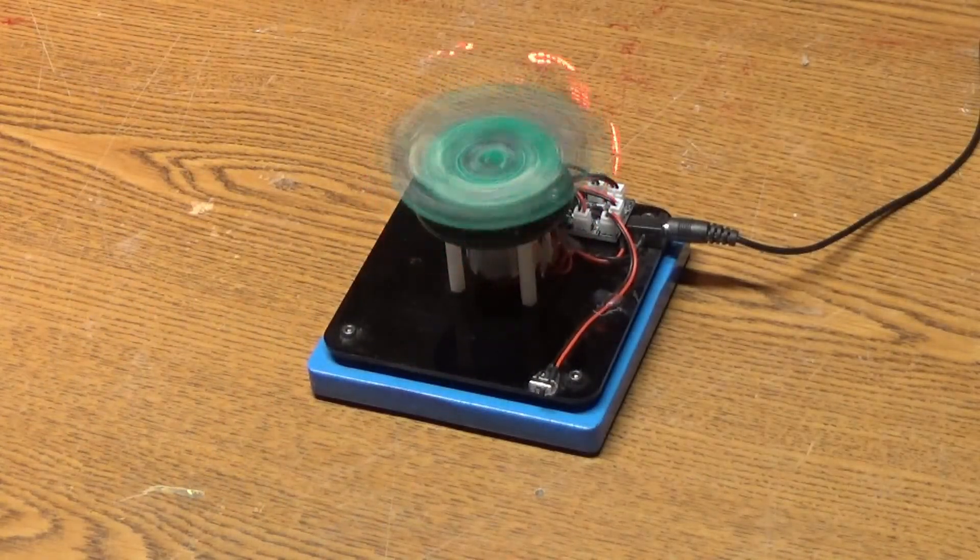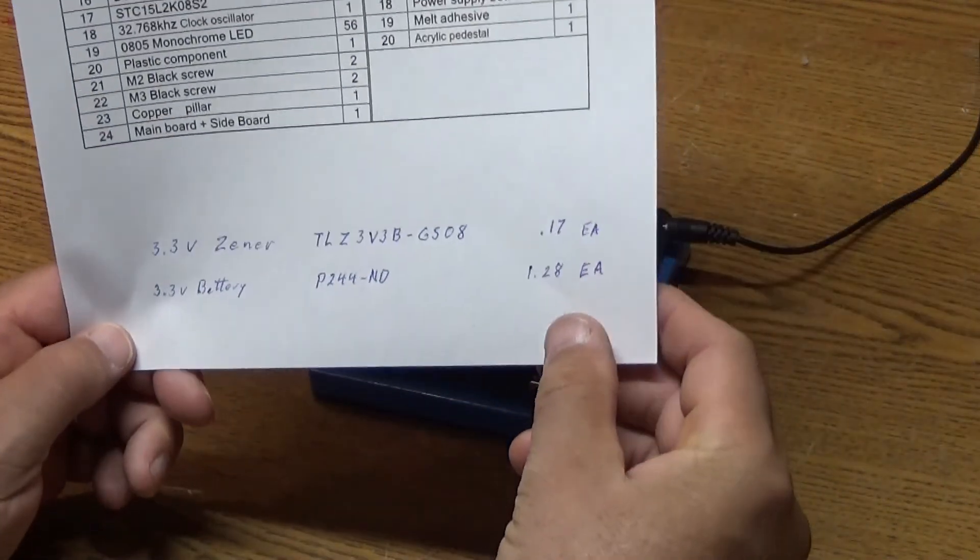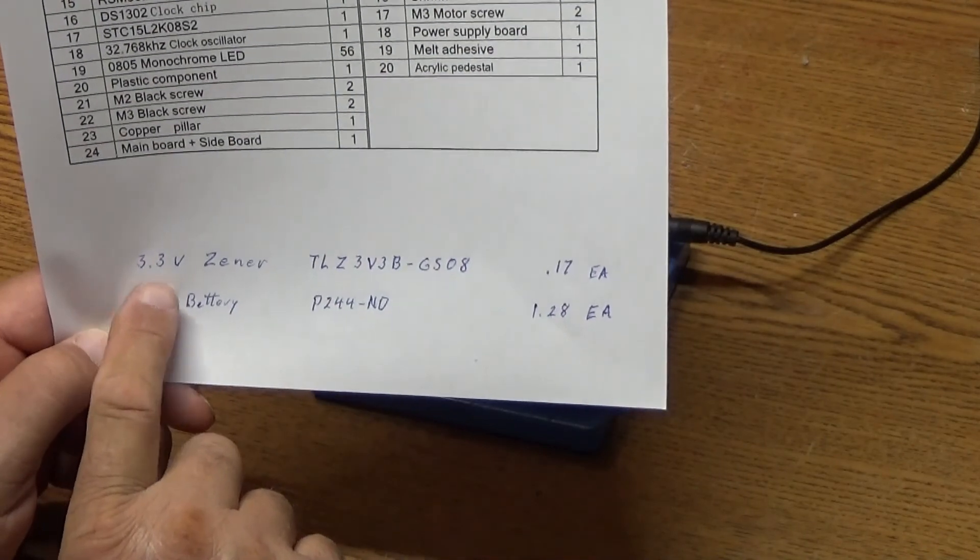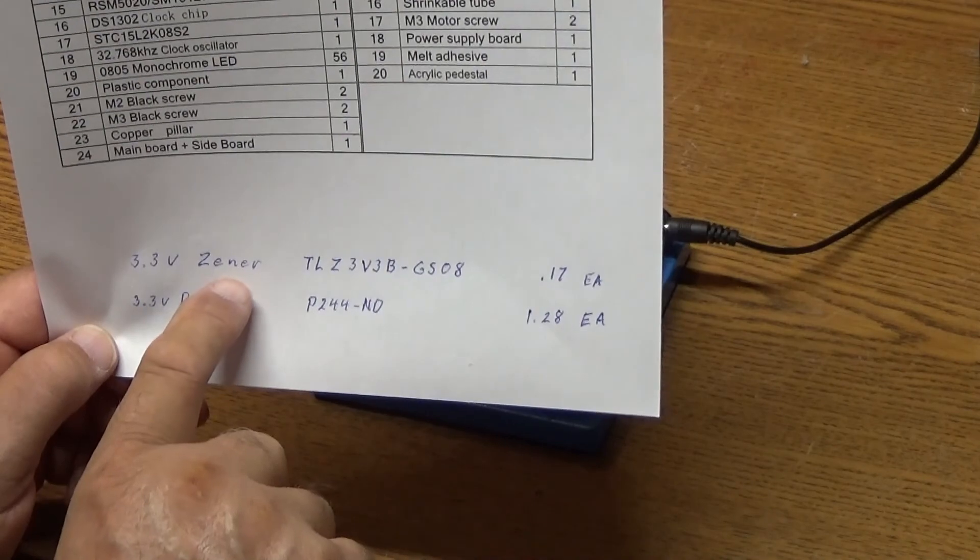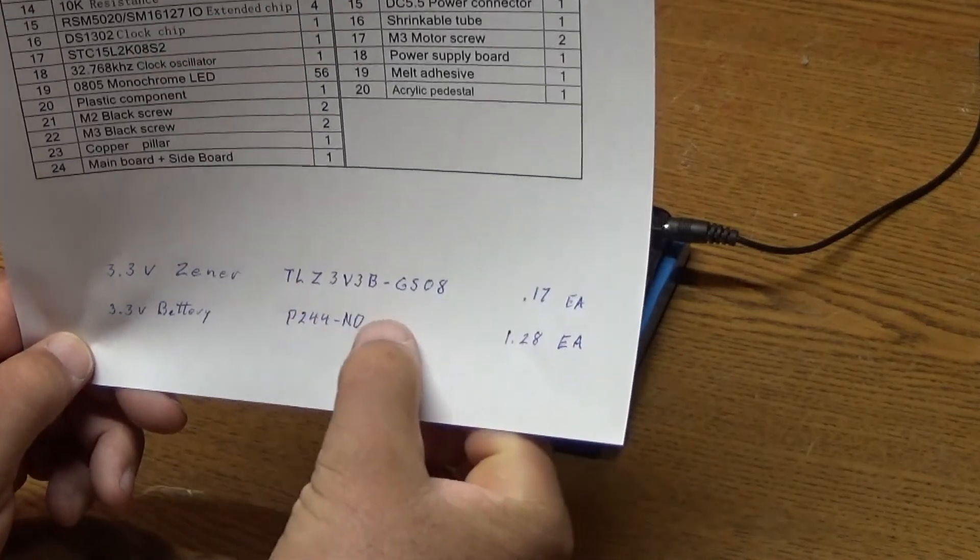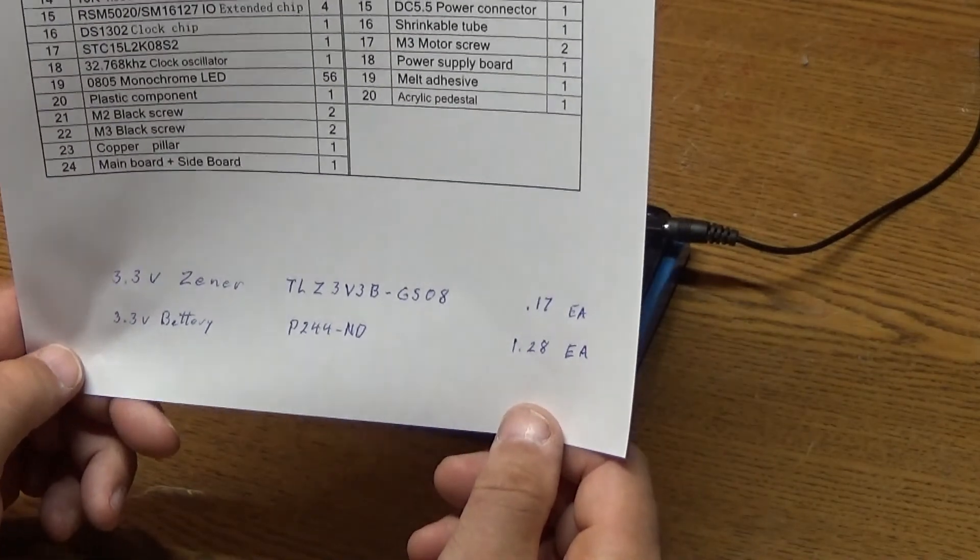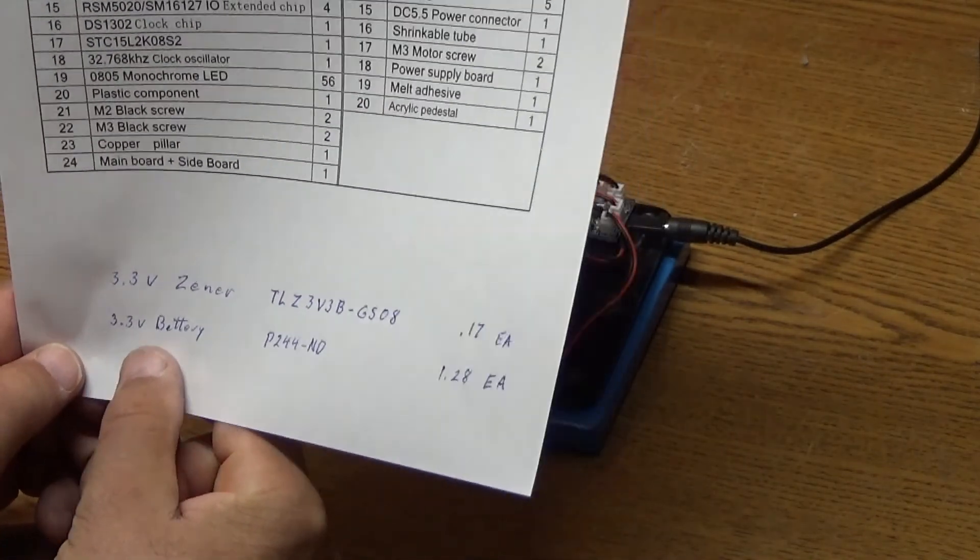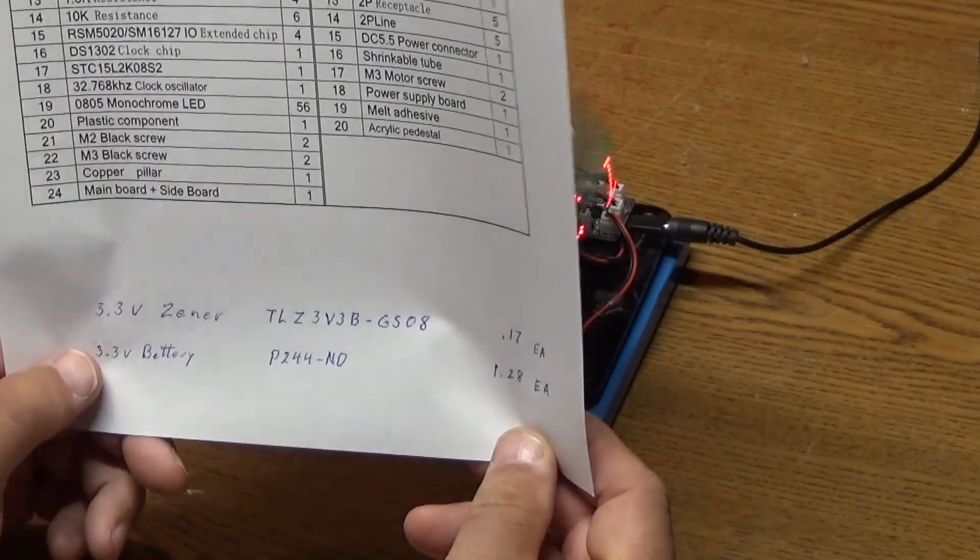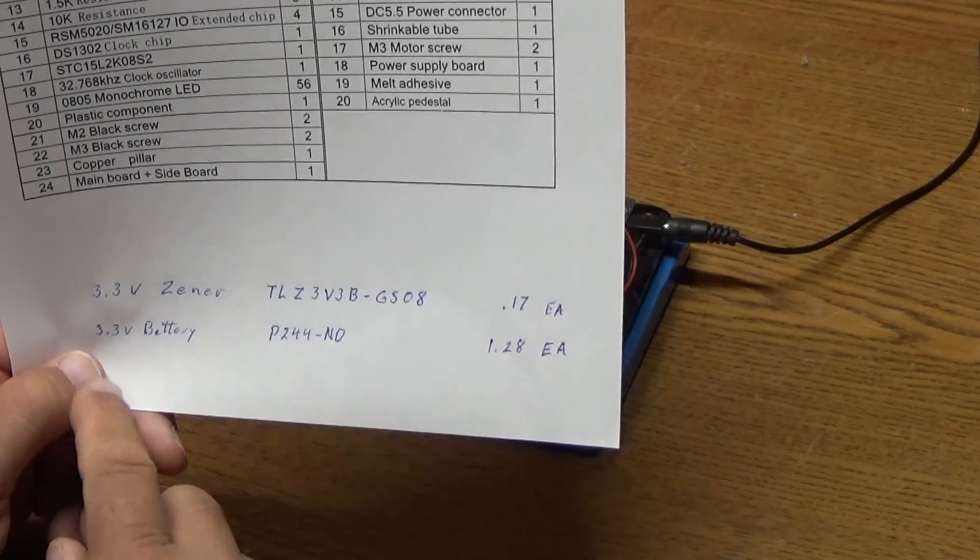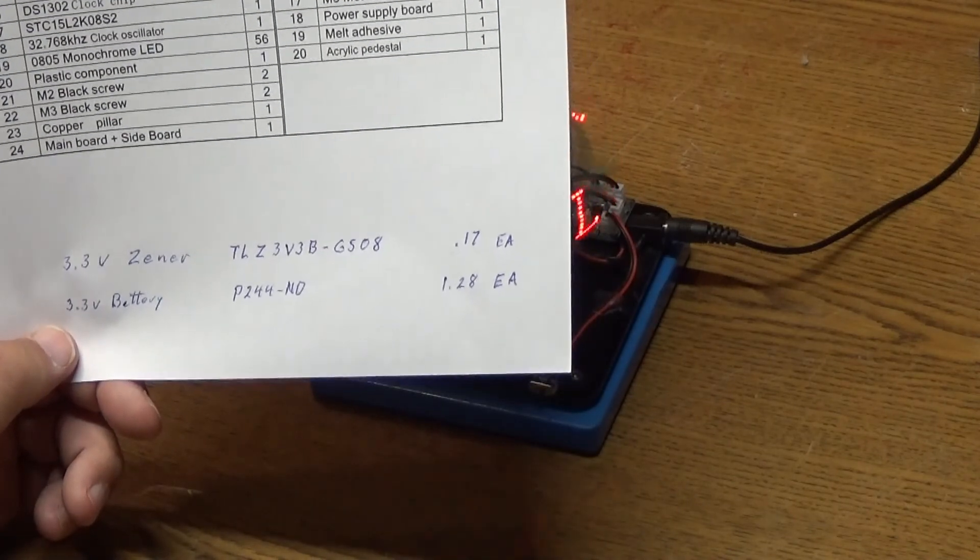So, what I ended up doing is I ended up ordering, instead of the 5.1 volt Zener diode, item 8, I ordered a 3.3 volt Zener diode. This is the part number, they're only 17 cents at Digikey. And at the same time, I also ordered the 3.3 volt battery, just because by the time I figured out what was going on, my battery was pretty low voltage, so I ended up replacing the battery at the same time.